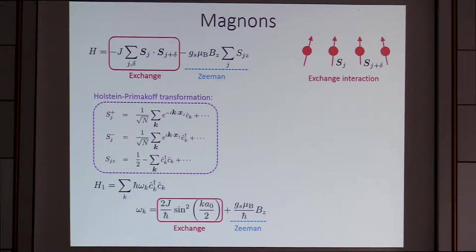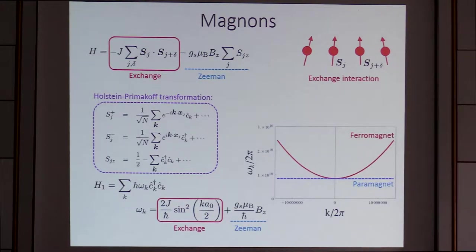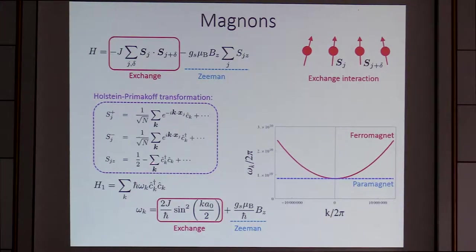What is particularly interesting is that the dispersion is not simple — it's quadratic — which represents that flipping an adjacent spin costs a lot of energy. Without exchange, the dispersion is just flat, which corresponds to the paramagnet case. But for a ferromagnet, the dispersion is quadratic. That's the important difference.